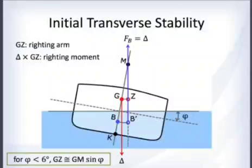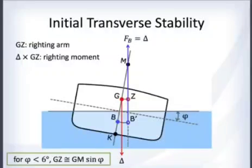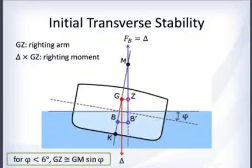Weight acts downward through the center of gravity G. Drawing a line from G perpendicular to the line connecting the current center of buoyancy B prime and M gives a distance called GZ — the righting arm.